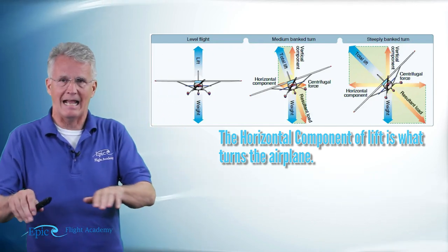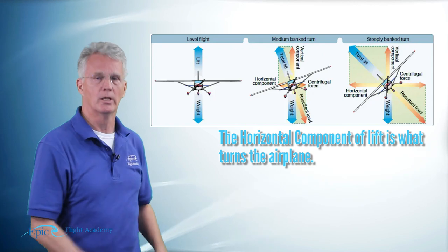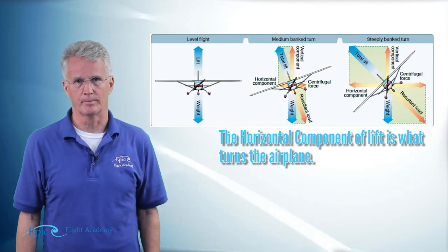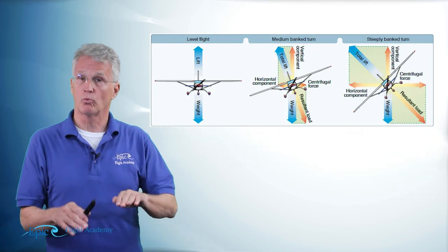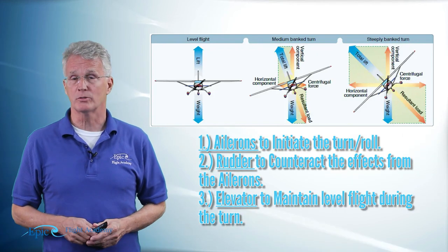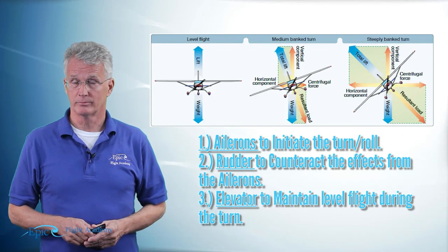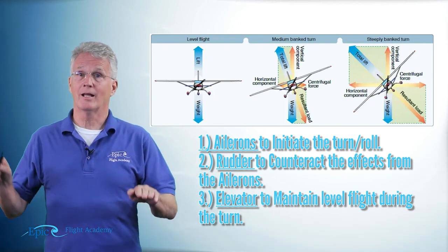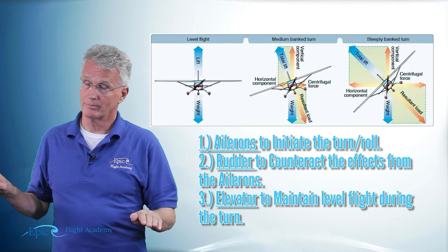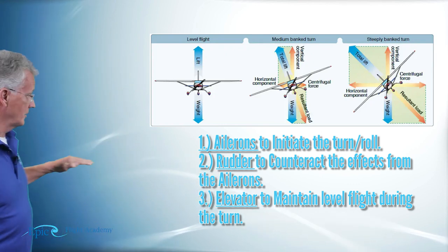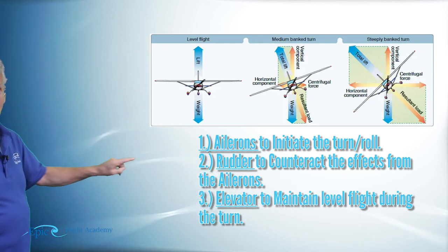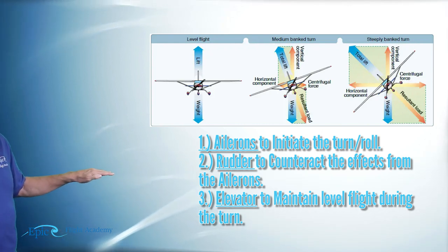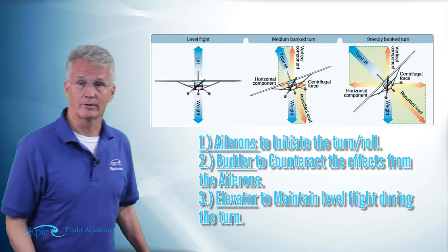That lift acting horizontally is what turns the airplane. The airplane was rolled into this position with the ailerons, and the rudder corrected adverse aileron yaw.